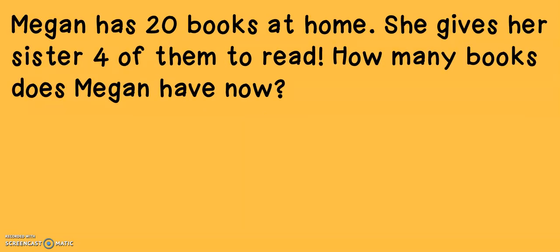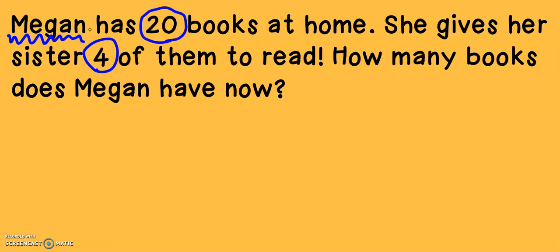Let's start with the first problem together. Let's take a look and see what we should do. Megan has 20 books at home. She gives her sister four of them to read. How many books does Megan have now? The first thing I always think about is: am I comparing two people? The only name I see in this problem is Megan. I'm also seeing that Megan is giving her sister books. I remember from previous problems that if someone is giving something away, I'm probably going to be subtracting. So let's make a subtraction equation.